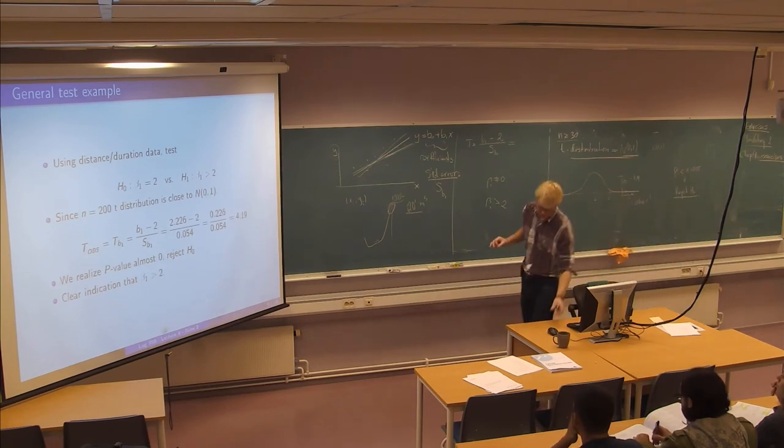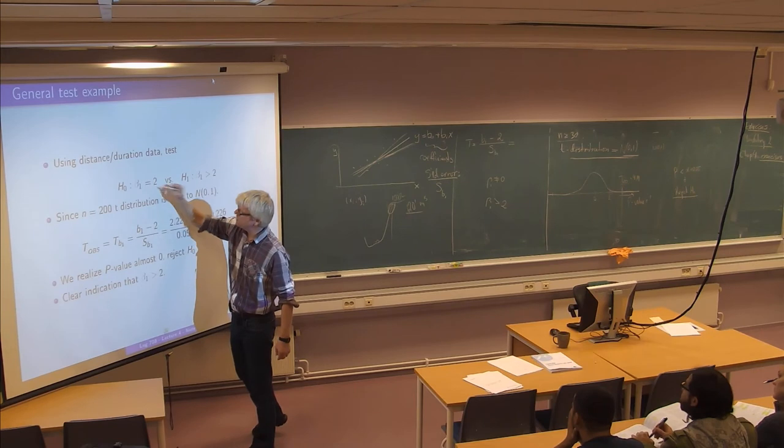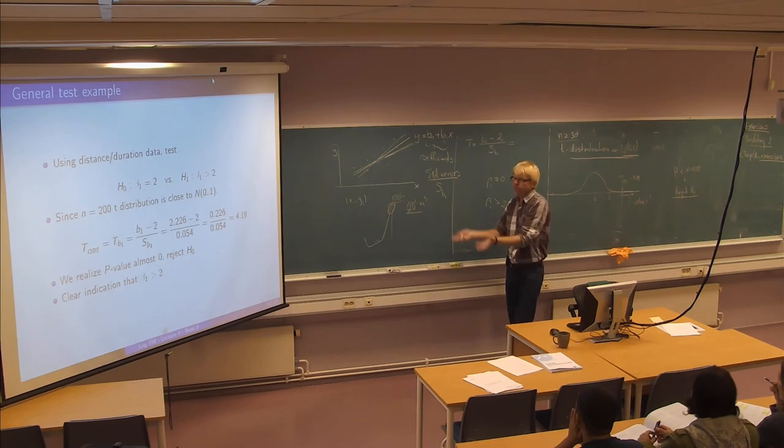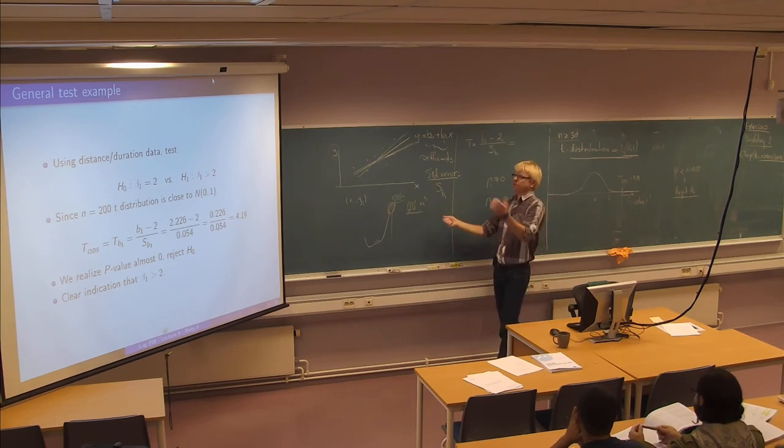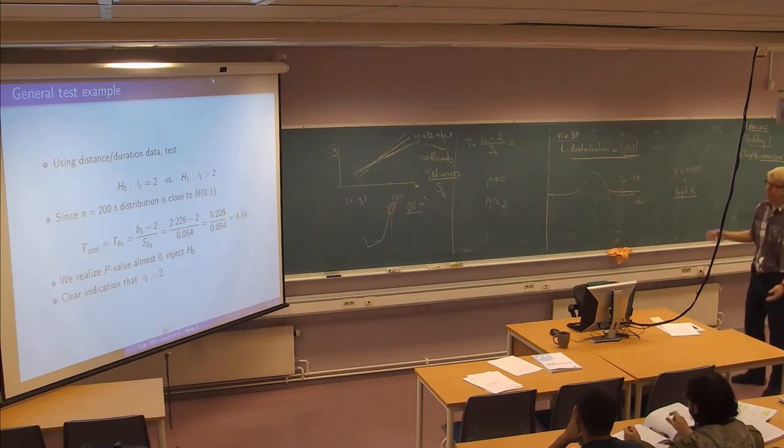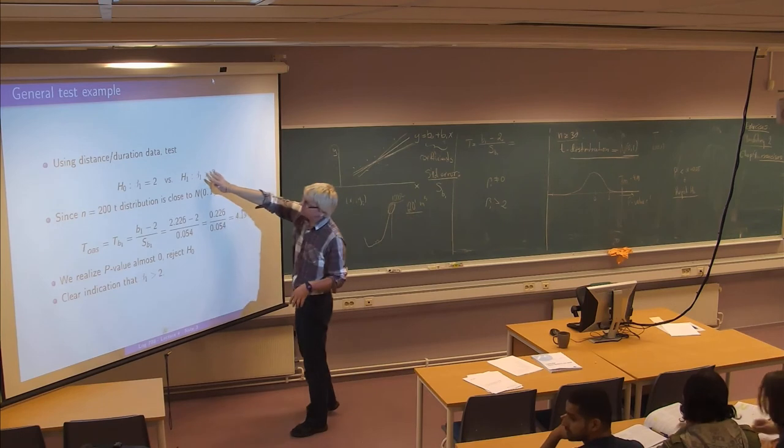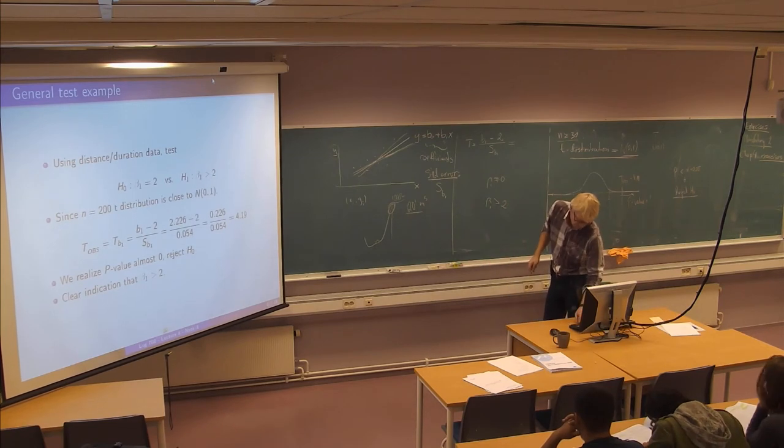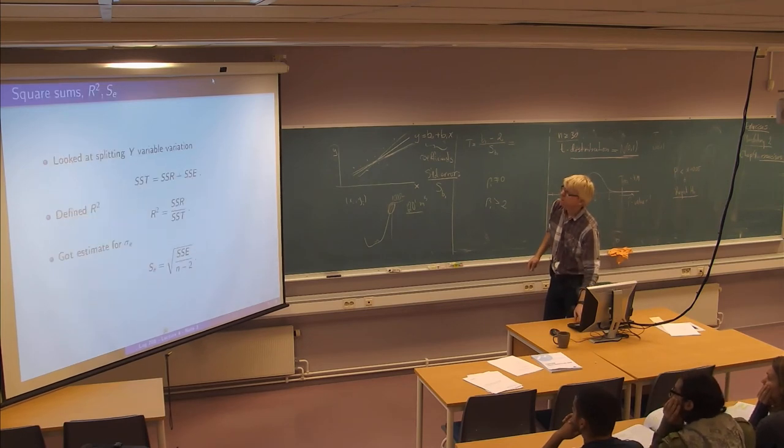So this might seem fairly abstract at the moment. Why do we want to test these beta things? But it's actually very important in science, these kinds of tests. Because this beta1 here, it tells us exactly the impact of distance on duration in this particular relation. And in general, it tells us something about the strength and the magnitude of the effect of some variables on other ones. And that is very much what science is about. So these kinds of tests are really important.